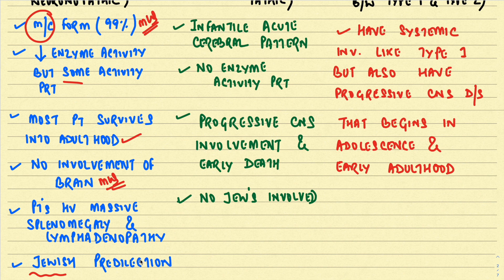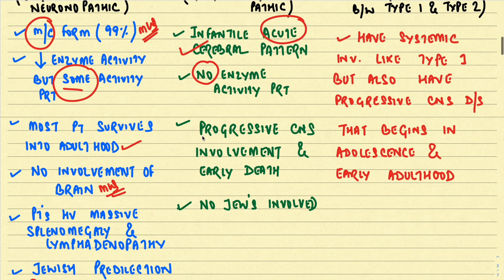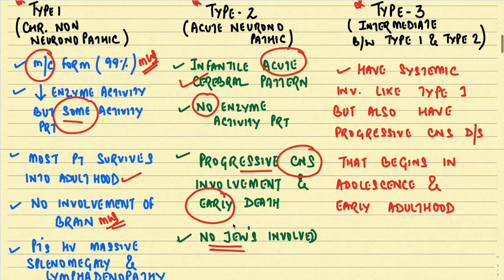Type 2 Gaucher's disease presents in infants with an acute course involving the cerebrum — called the infantile acute cerebral pattern. Unlike Type 1, there is no enzyme activity present at all, there is progressive CNS involvement leading to early death, and it does not have a Jewish predilection. These are four key points to differentiate Type 2 from Type 1.